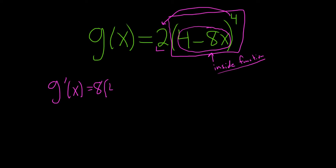Then we leave the inside piece untouched, 4 minus 8x. 4 minus 1 is 3.